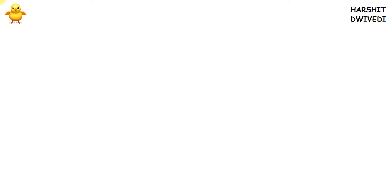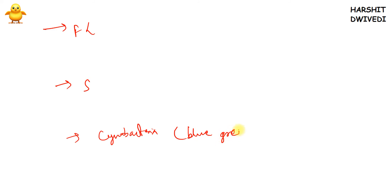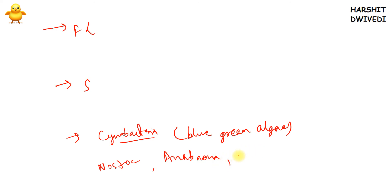Now for microbes — when talking about microbial nitrogen fixation, three types are known: free-living bacteria, symbiotic bacteria, and cyanobacteria. Cyanobacteria include blue-green algae, which are very active in nitrogen fixation, especially in marine and ocean ecosystems. Some examples are Nostoc, Anabaena, and Spirulina.